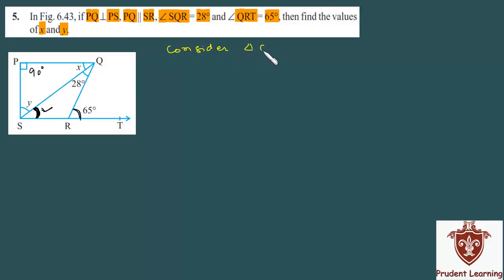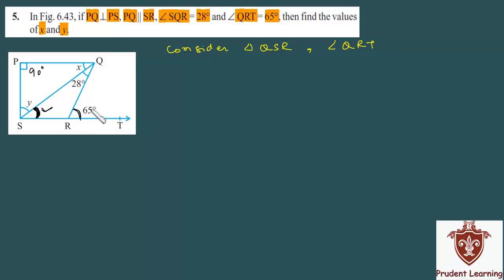Consider triangle QSR. Angle QRT is 65 degrees, as given. QRT is an exterior angle of triangle QSR.